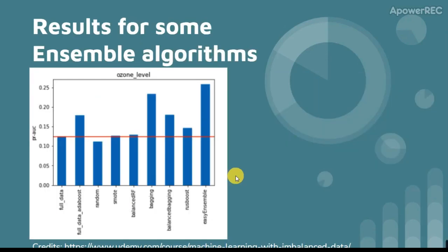Here I show the results obtained for some ensemble algorithms using the precision recall AUC, since it's the recommended metric for imbalanced datasets. You can see that the results are very bad, with a maximum AUC of 0.26.